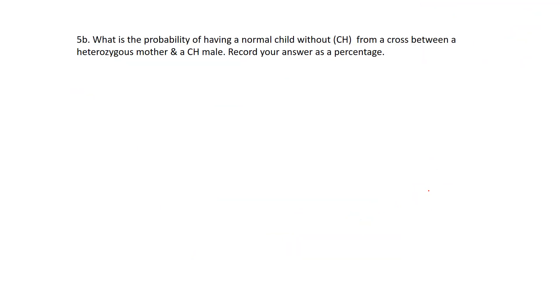Okay, let's take a look at B here. Now, what is the probability of having a normal child without CH? So in this case, it's not a male or a female, just a child. So really just to have a child, unless you're an alien or something, it's 1 out of 1, which doesn't change the answer at all. So we just keep that out of it. Without CH, from a cross between a hetero mum.